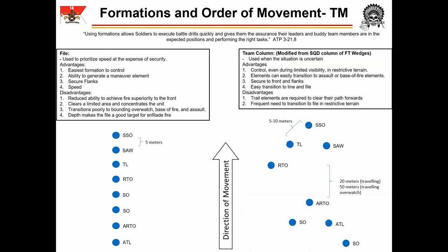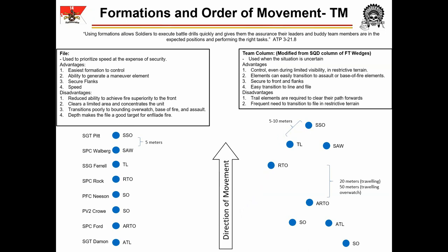It is highly advised that when you brief your soldiers in person, you mark their name next to each position — in this case, the team file would be marked with the names of the soldiers. This clarifies the formation and allows soldiers to focus on their individual responsibilities during execution. Additionally, as ATP 3-21.8, the infantry platoon squad states, using formations allows soldiers to execute battle drills quickly and gives them the assurance that their leaders and buddy team members are in the expected positions and performing the right tasks. This is critical in low visibility and chaotic environments.